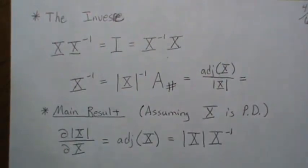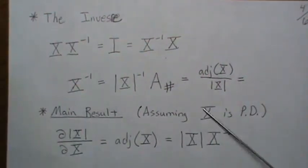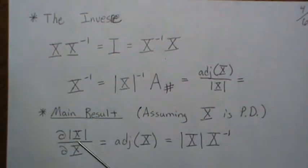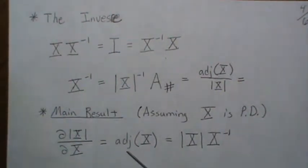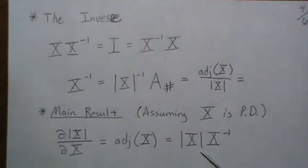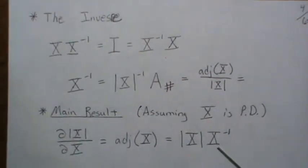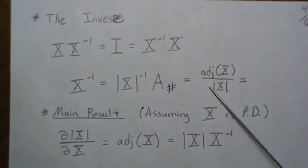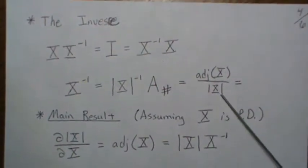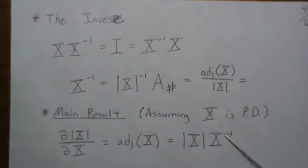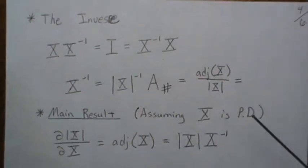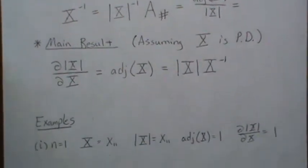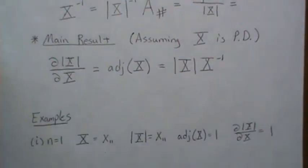The main result: assuming X is positive definite, the derivative of the determinant with respect to the matrix X is just the adjunct matrix. It can also be written as the determinant of X times X-inverse, since the inverse equals one over the determinant times the adjunct — so multiplying through, the determinant factors cancel leaving just the adjunct matrix.